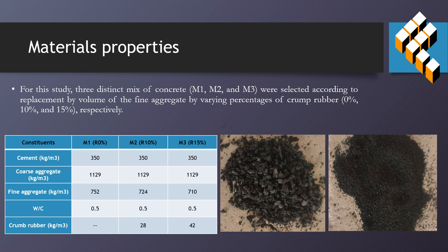For this study, three different concrete mixes — M1, M2, and M3 — were selected according to the replacement of fine aggregate volume by varying percentages of crumb rubber: 0%, 10%, and 15%, respectively.